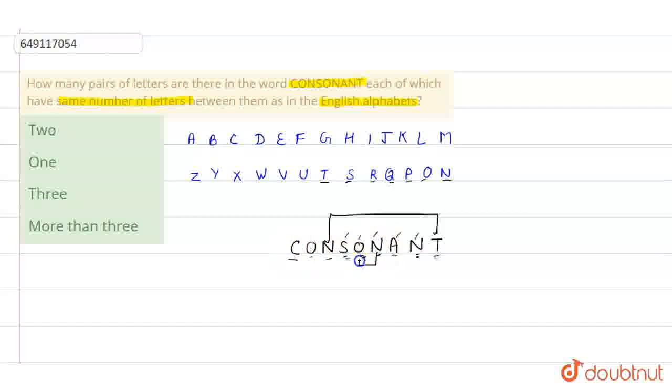N or O ke beech mein koi bhi letter nahi hota. English alphabet mein bhi koi letter nahi hota. Yaha pe bhi koi nahi hai. To yaha pe ye second pair ho gaya. O ke bad N ke bad O, P, Q, R, S. Koi or koi nahi nahi hota.